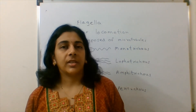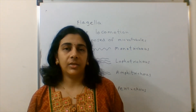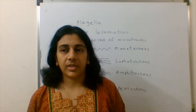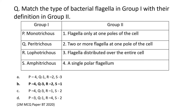Now going to the question — we have to match the columns. After this explanation, the question becomes very easy. The answer for this question is B. Monotrichous flagella — that is a single flagella present at one pole of the bacterial cell — matches with four, that is 'single polar flagella'.